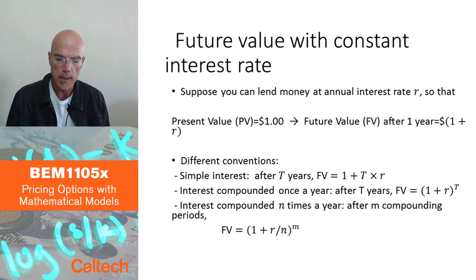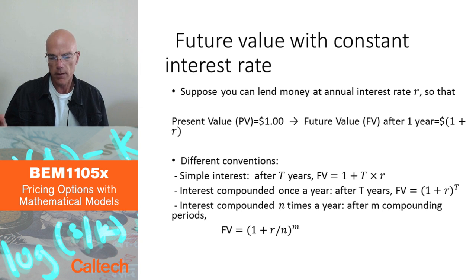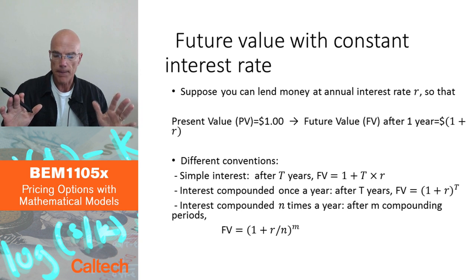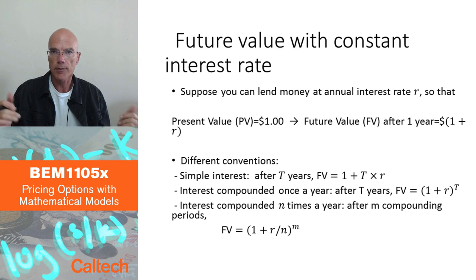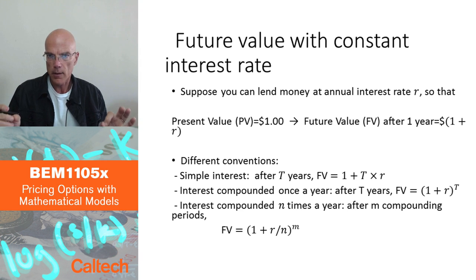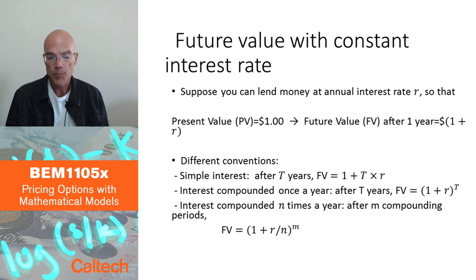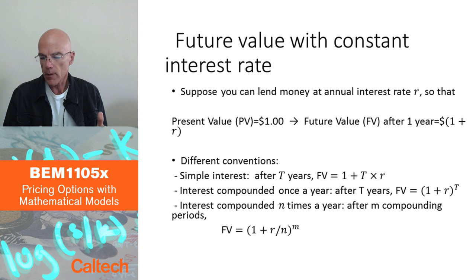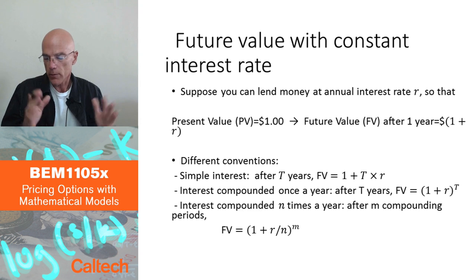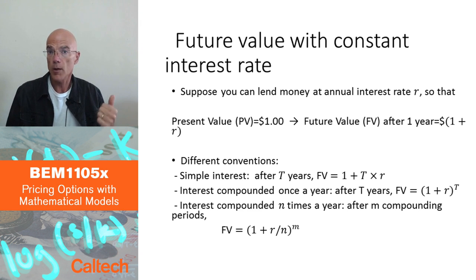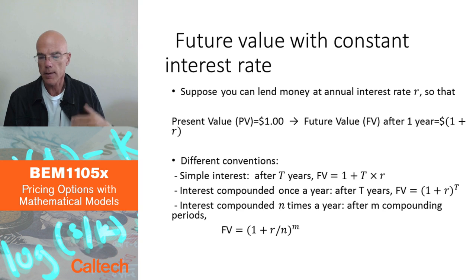The first thing we assume is that there is a risk-free asset in the markets. The only asset we're going to look at is borrowing and lending into a bank account with a deterministic, known interest rate. So when you put money in the bank, you know exactly how much you will get after a certain amount of time. The bank quotes you an interest rate, and it's really a matter of convention what kind of interest rate that is.